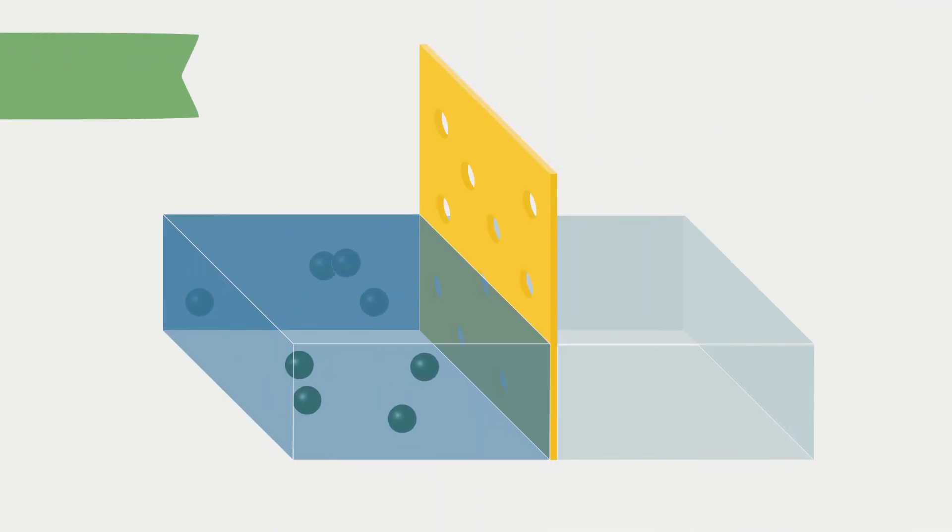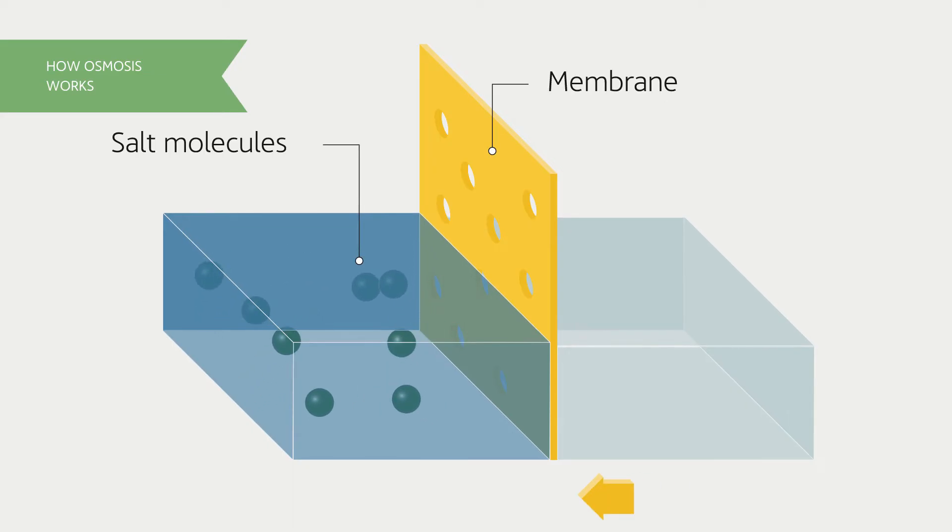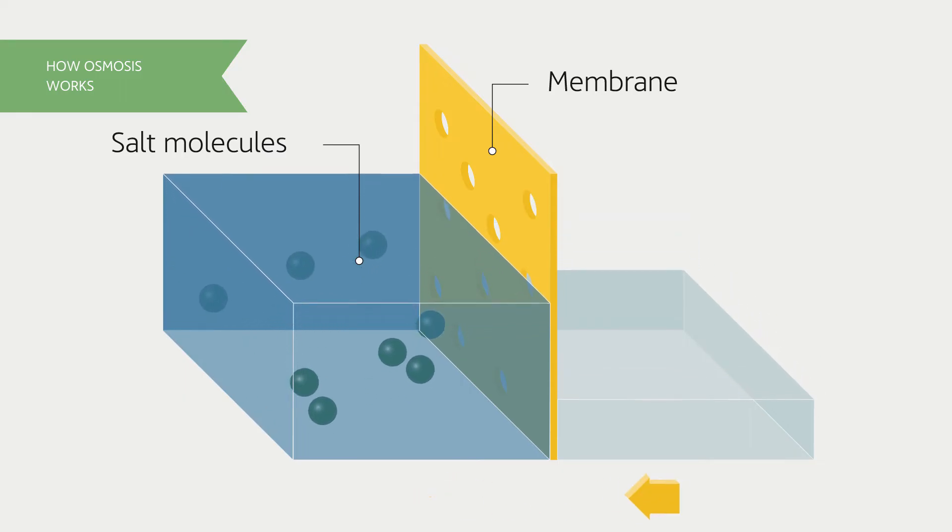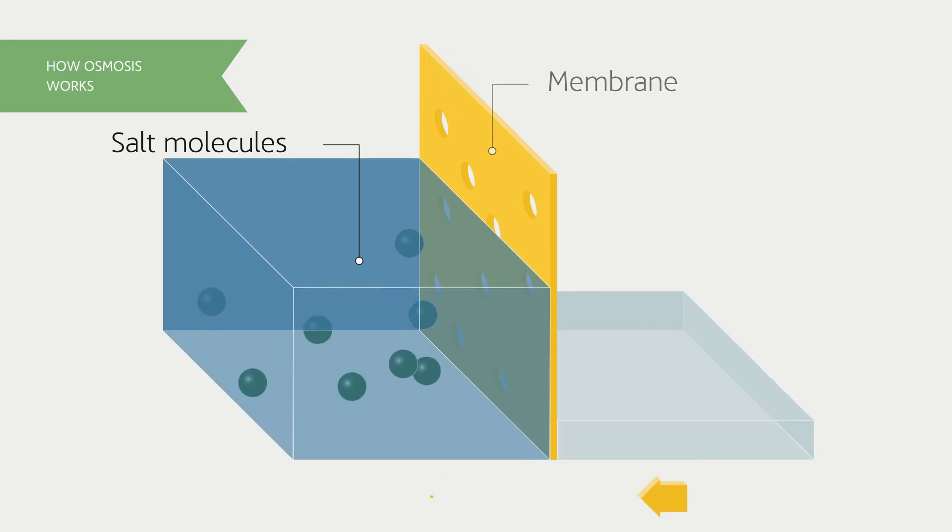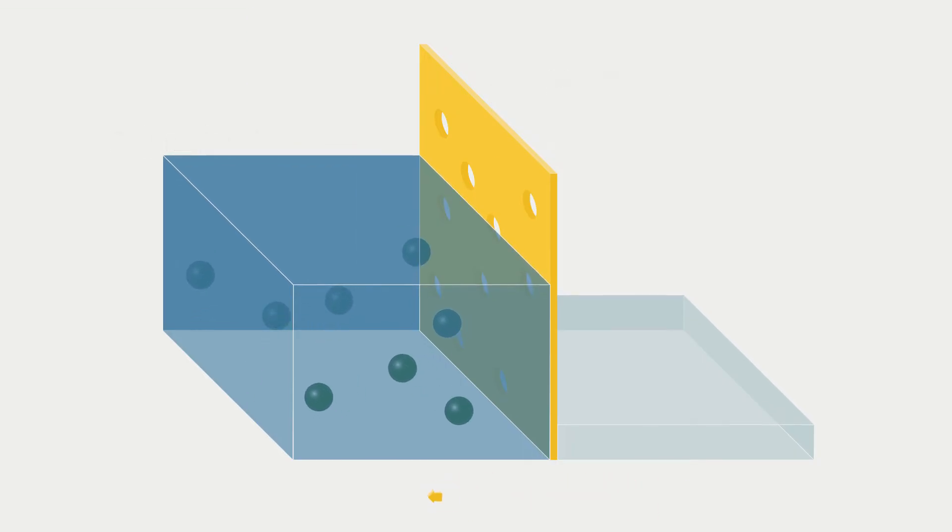Osmosis is a physical phenomenon by which two liquids in different concentrations, separated by a semi-permeable membrane, come into contact and tend to even themselves out. The liquid with the lower concentration crosses the membrane toward that with highest concentration.